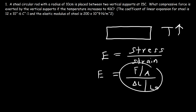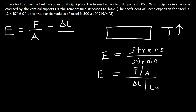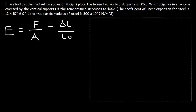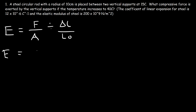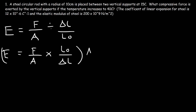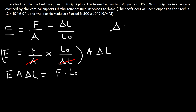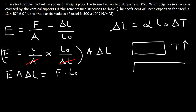We need to rearrange this fraction. Right now we have E equal to F divided by A, divided by the change in length over L₀. Using the keep-change-flip method, I'm going to keep the first fraction the same, change division to multiplication, and flip the second fraction. Then multiply both sides by A times delta L. On the right side these will cancel, giving us E times A times delta L equal to F times L₀. Another equation we need is: the change in length equals alpha, the coefficient of linear expansion, times L initial times delta T. Anytime you increase the temperature, you can calculate the change in length using that formula.